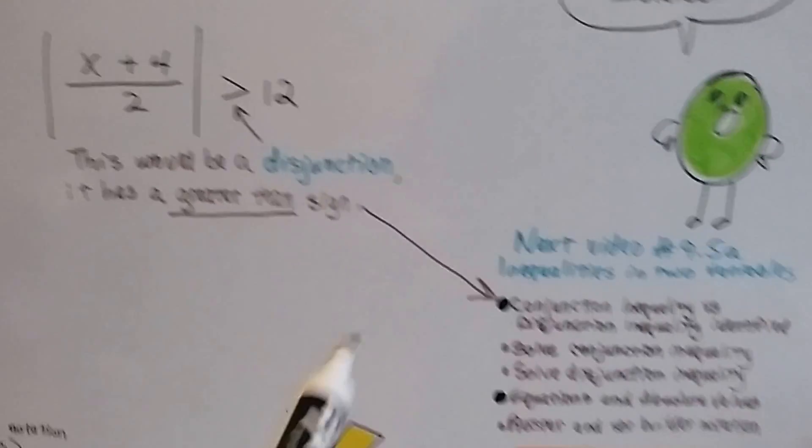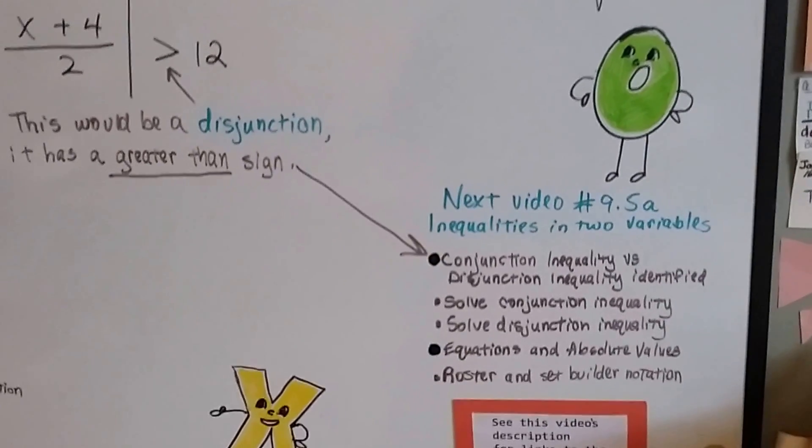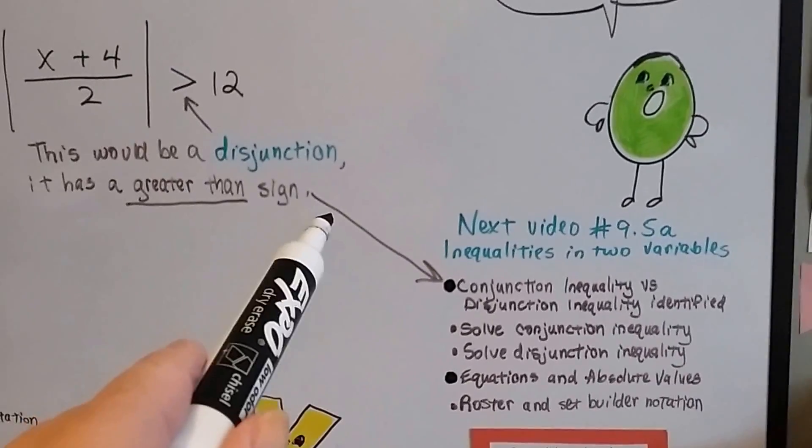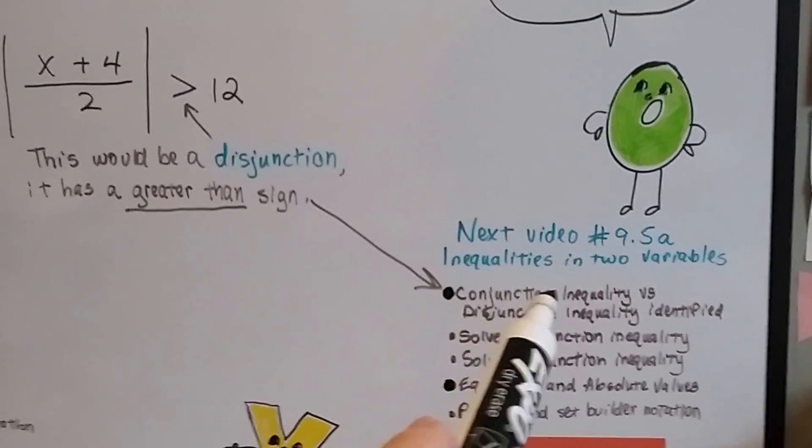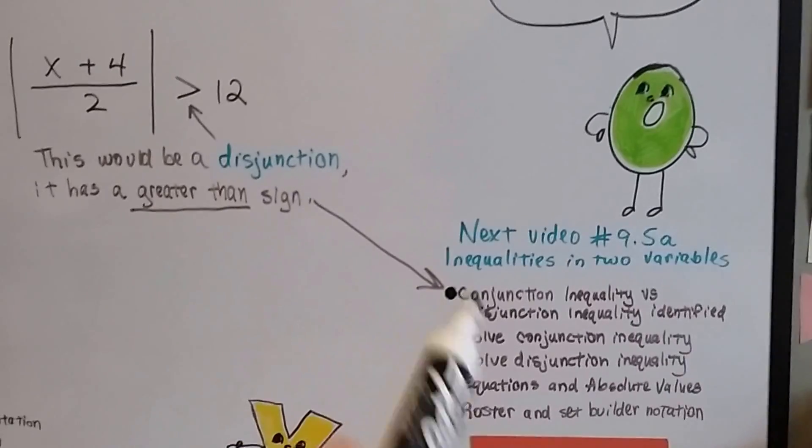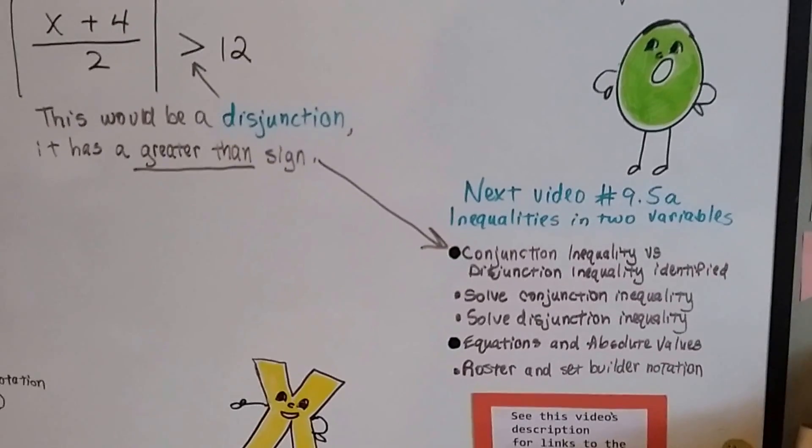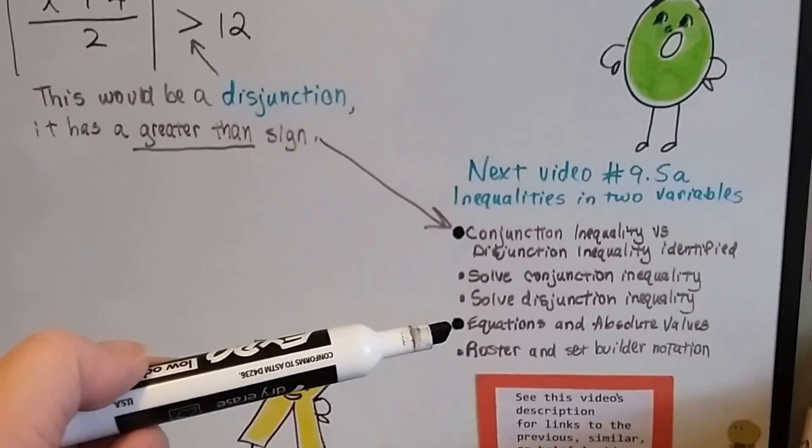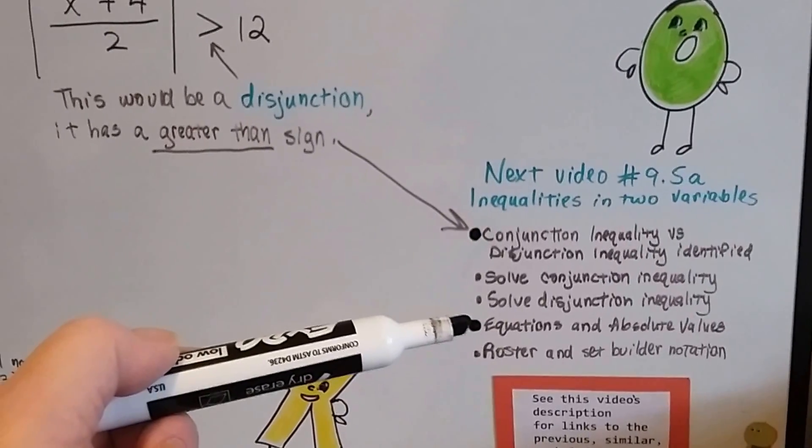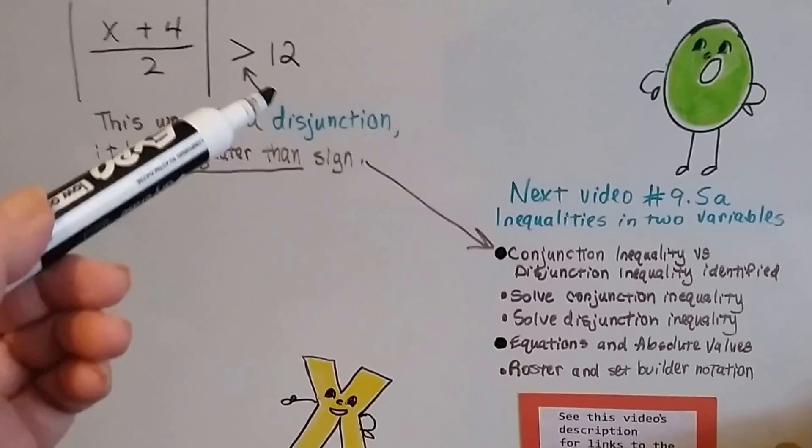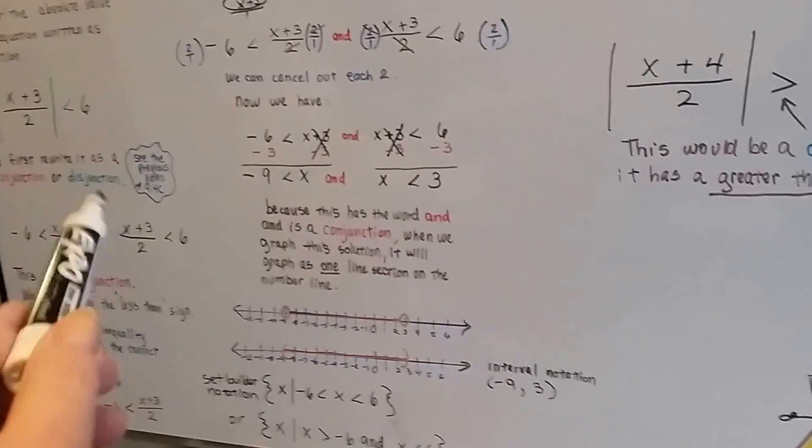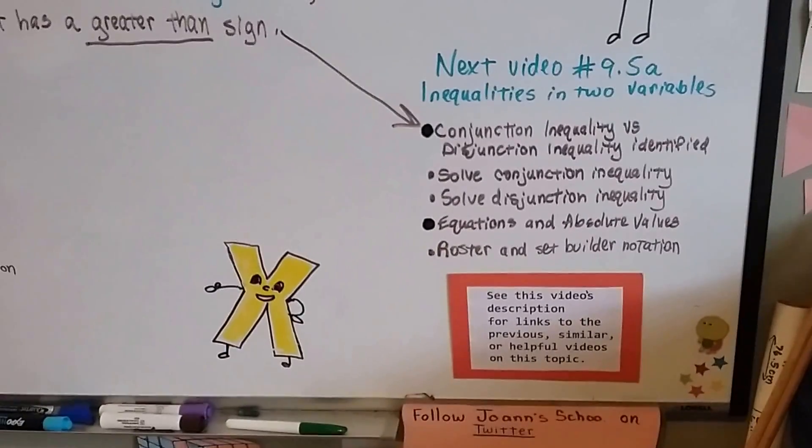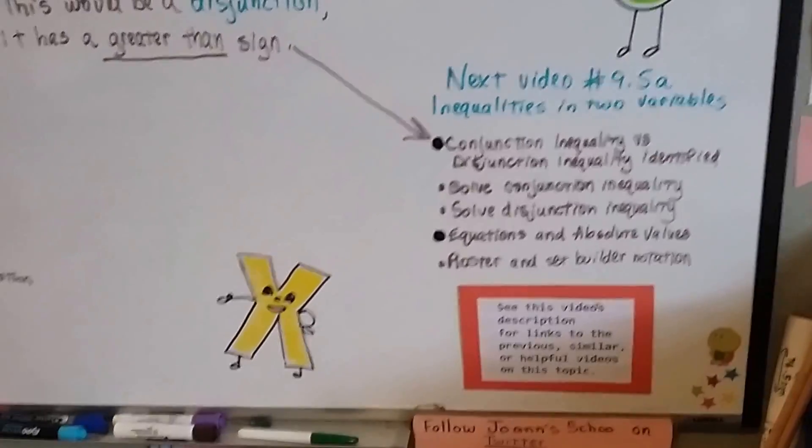So our next video, 9.5a, is going to be about inequalities in two variables. And if you want to go back to 9.4c and learn how to quickly tell between a conjunction and disjunction, there's a link in this video's description, so you can do that. And there's going to be a link for solving conjunction inequalities or disjunction ones. There's going to be a link for the absolute value and how to write it and know if it's a negative or positive and how to do that.